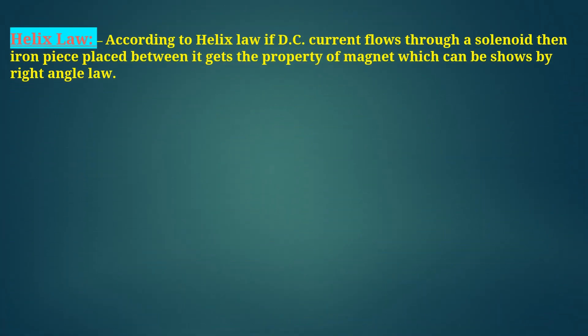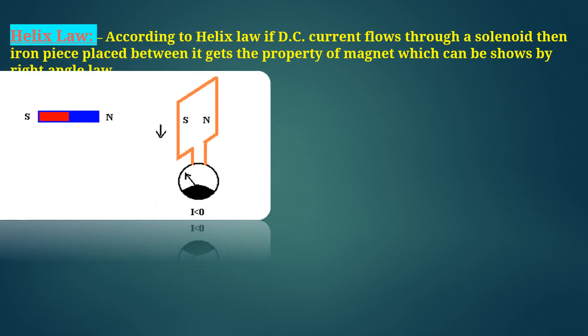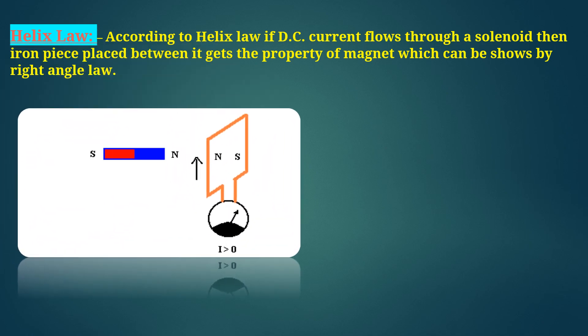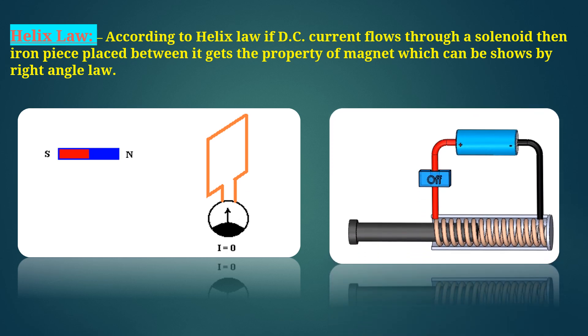Here, Helix law comes into picture. According to Helix law, if DC current flows through a solenoid, then an iron piece placed between it gets the property of magnet which can be shown by right angle law. You can see in the second graphic image that one battery is connected with the coil and one iron rod is connected with it. When the battery is energized, iron is attracted by the solenoid coil.